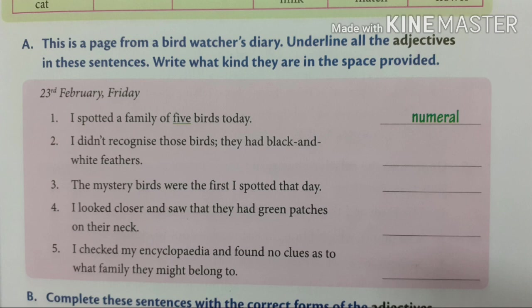Which are the adjectives used in the second sentence? 'Those birds' — which means it is a demonstrative adjective. 'Black and white' — which is a descriptive adjective.